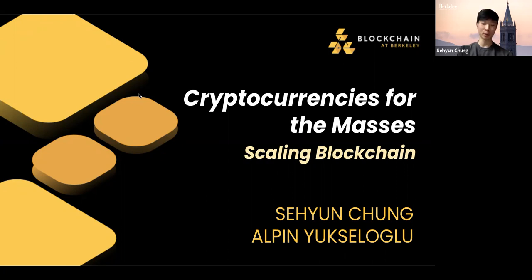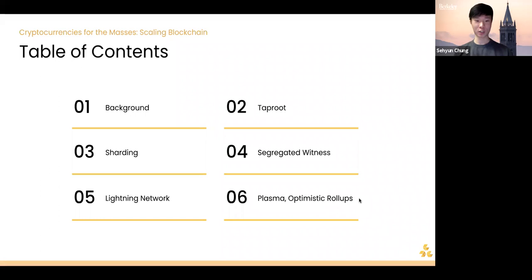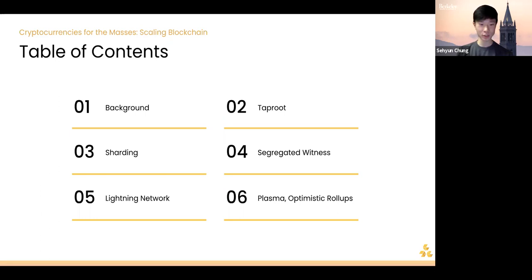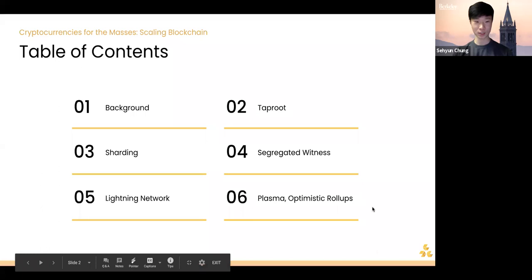Welcome to week eight of the fundamentals webinar. Today's lecture will be talking about cryptocurrency for the masses, mainly scaling Bitcoin or scaling blockchains in general. We'll start with a background on scalability, then go over different scalability solutions — evaluating their pros and cons. Those solutions will be Taproot, sharding, Segregated Witness, the Lightning Network, Plasma, and finally optimistic roll-ups.